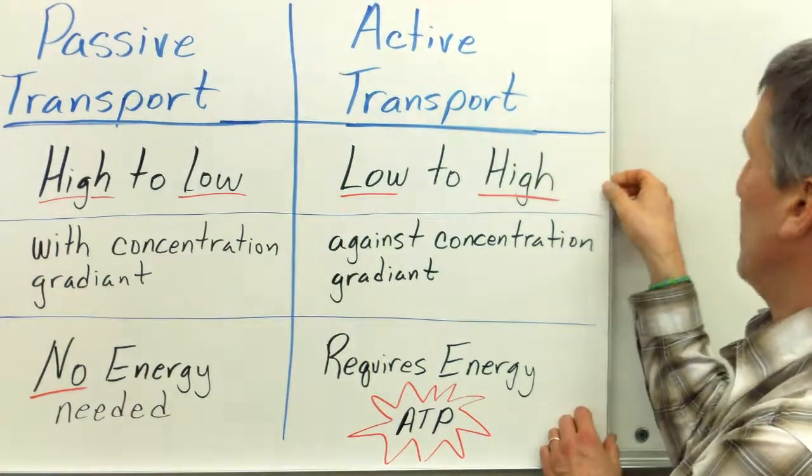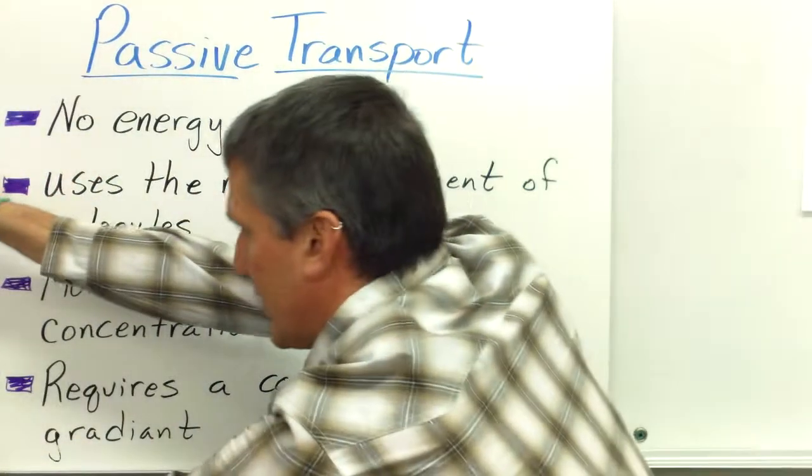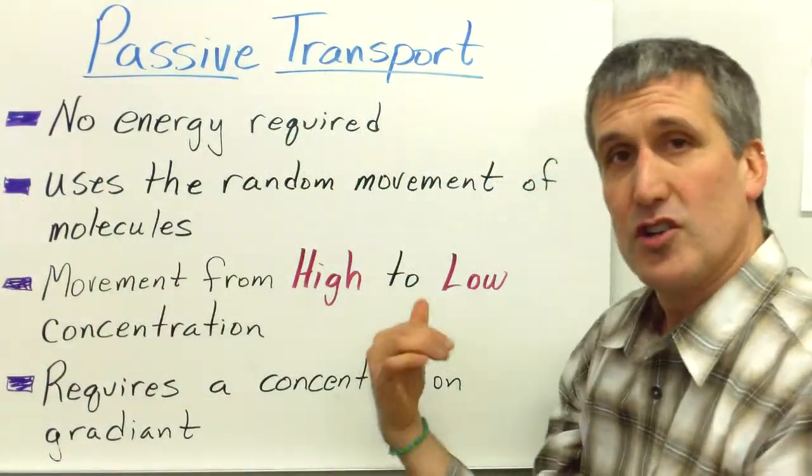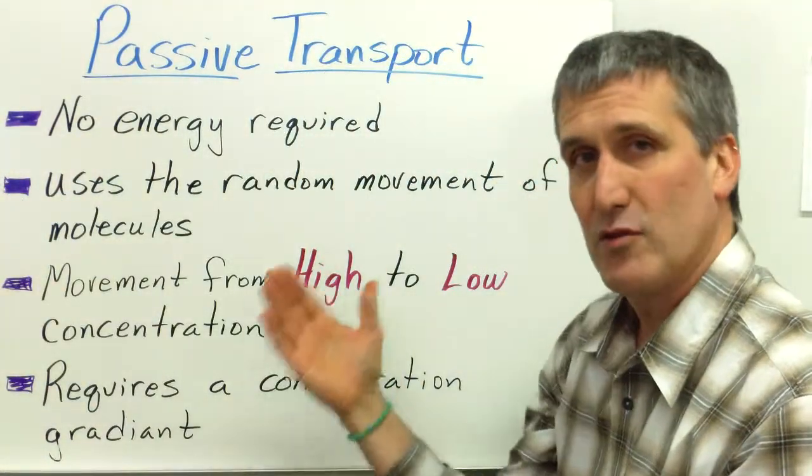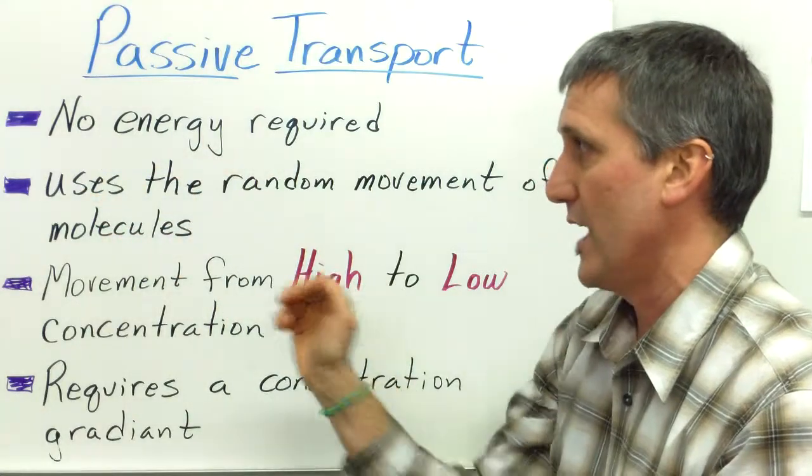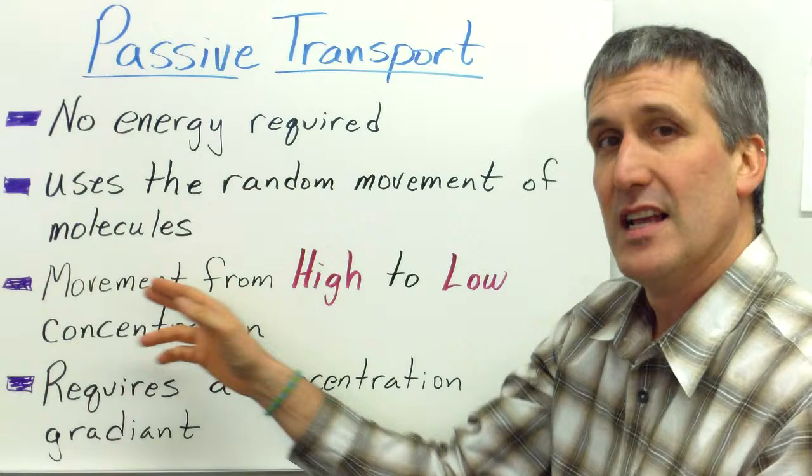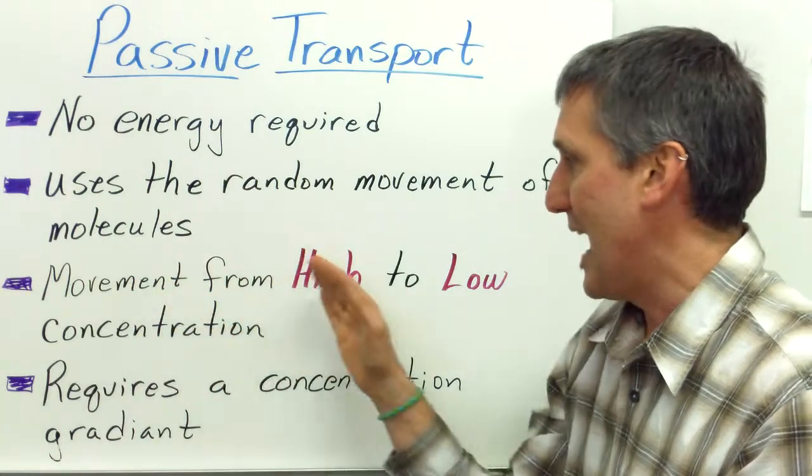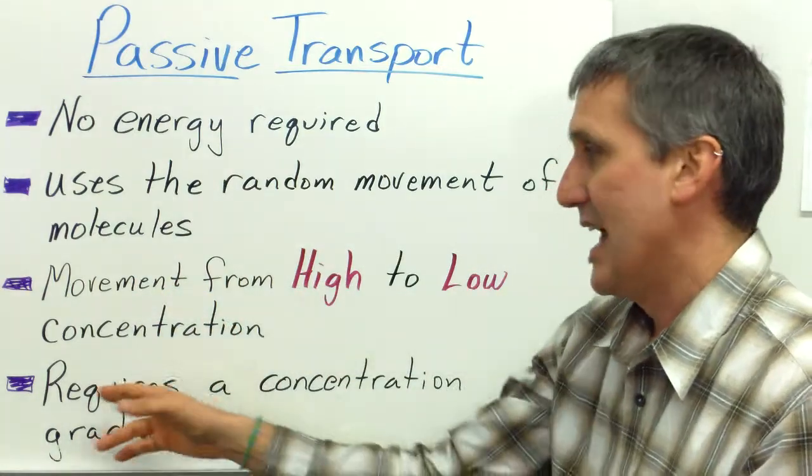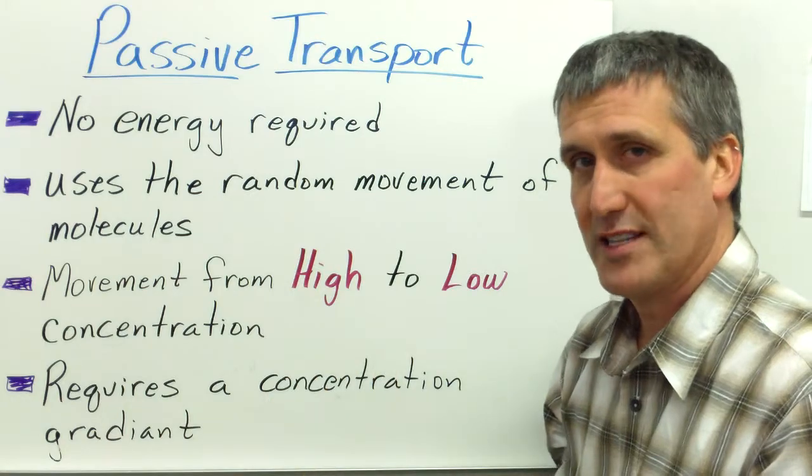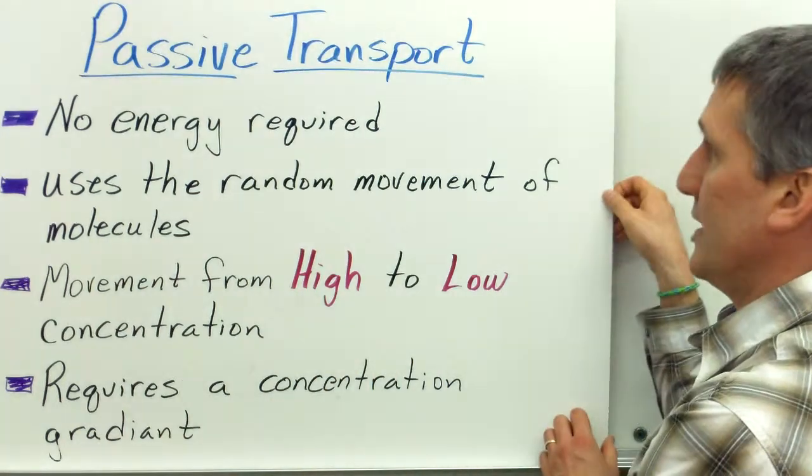So let's start with passive transport. Passive transport, again, no energy required, uses the random movement of molecules. And this is the movement of molecules from high to low concentration, and this requires a concentration gradient in order to take place.